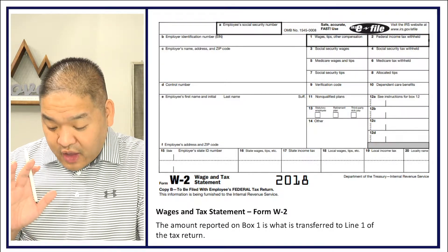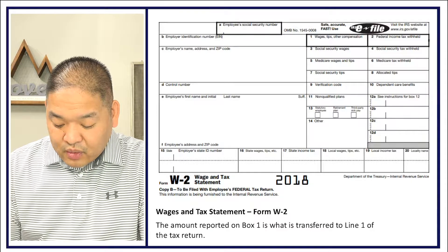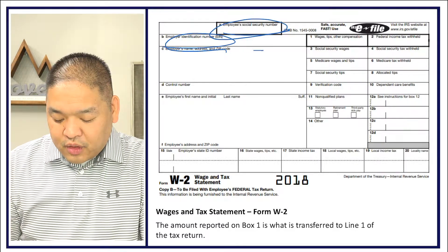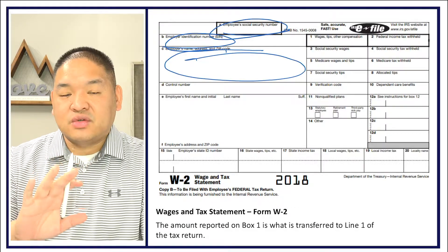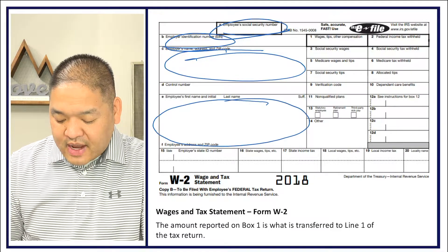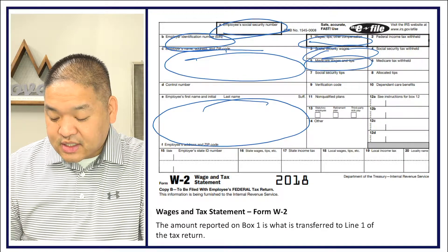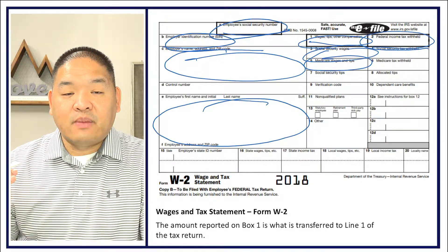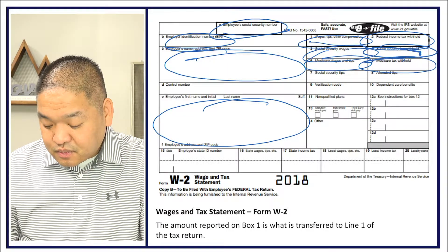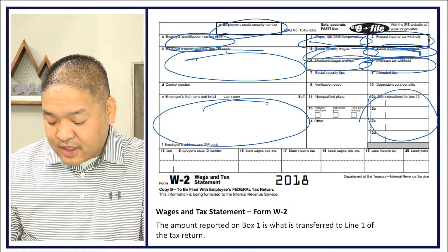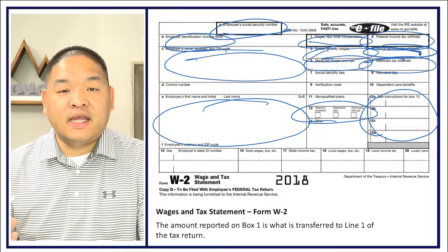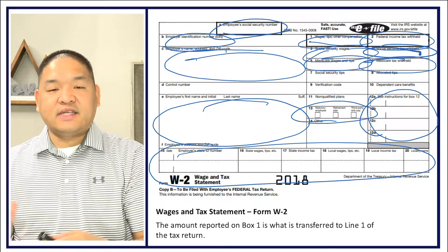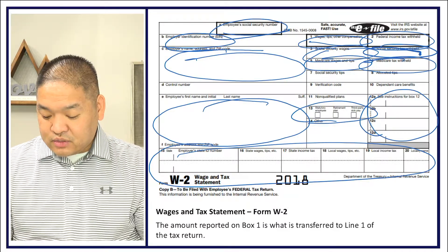Here's what a W-2 looks like. It includes the employee's social security number, the employer's EIN (Employer Identification Number), and the employer's information. Box 1 is wages; Box 2 is the federal income tax withheld from your paycheck — that's what goes on the tax return as taxes paid in advance. You also have social security and Medicare amounts, retirement and statutory employee boxes, and state income tax information in Box 15.